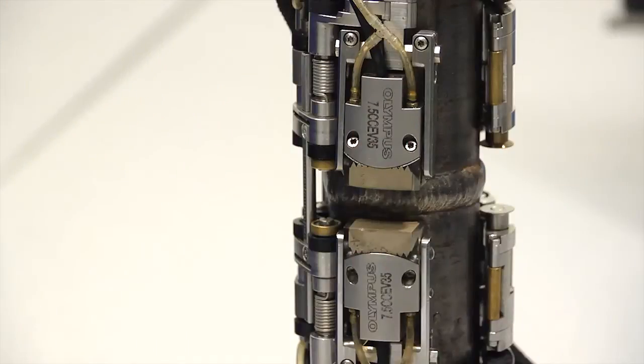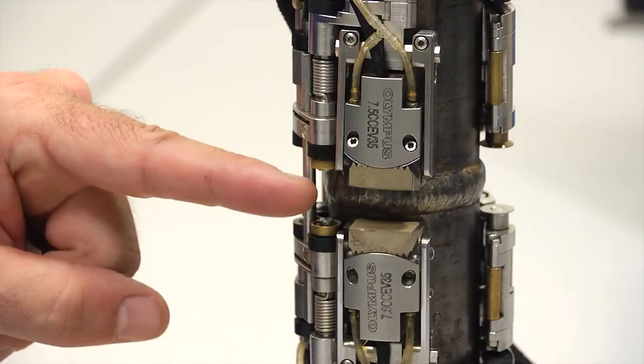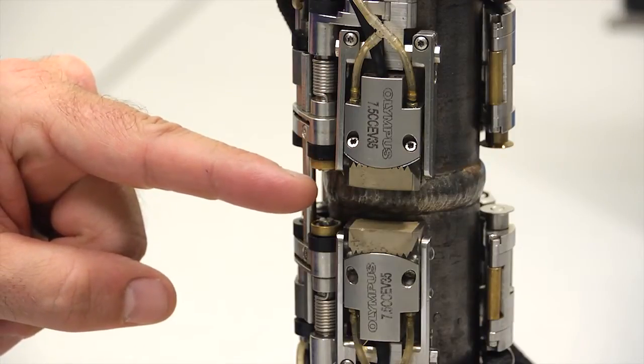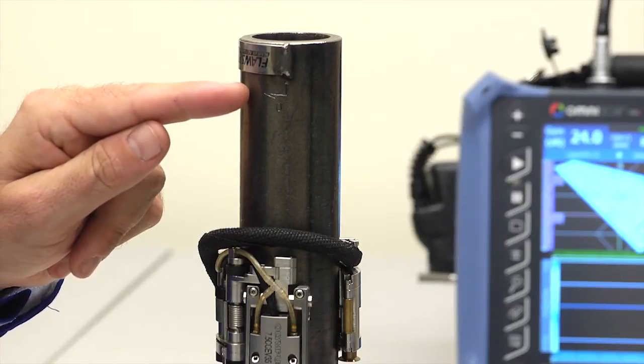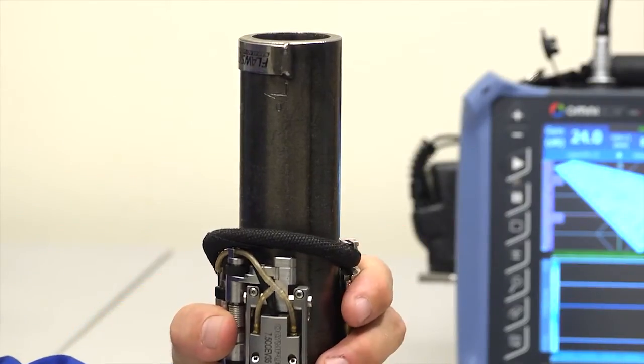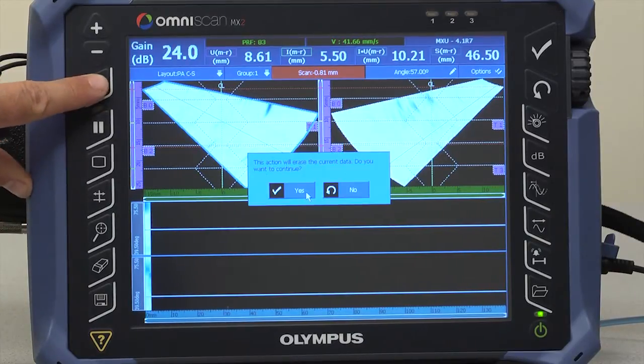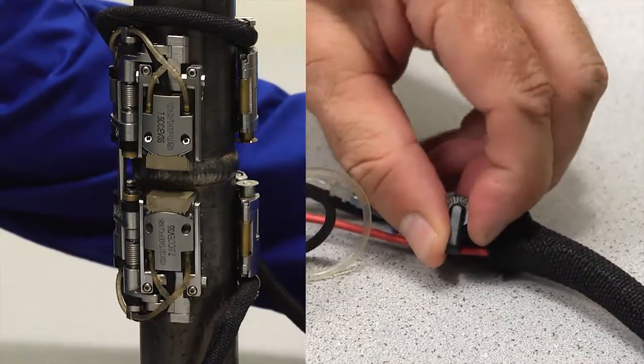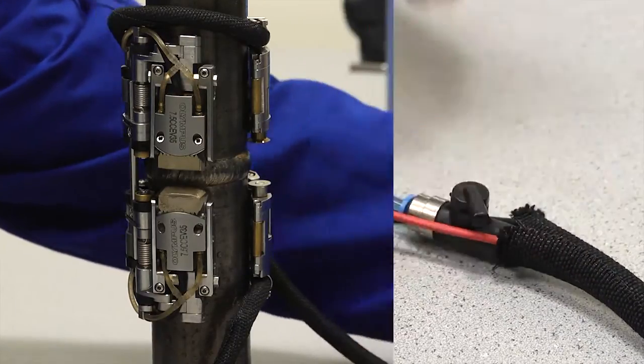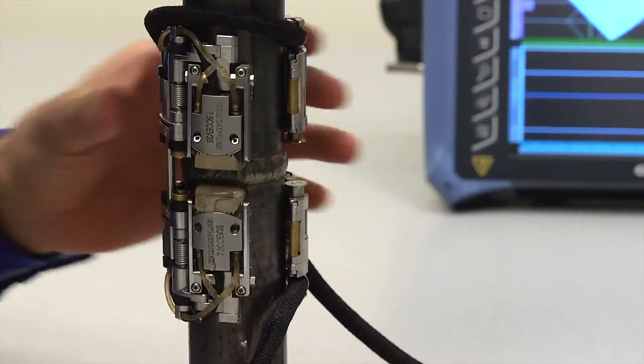The probes are secured in the scanner at the predetermined position relative to the weld centerline. The scanner is placed on the pipe at the inspection start position. Select start inspection on the OmniScan, start the water supply, and move the scanner around the pipe smoothly.